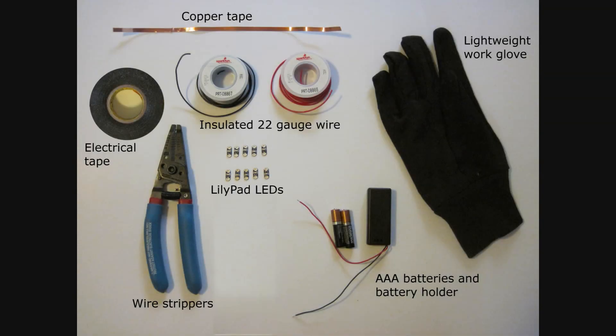To get started with this project, you'll need the materials pictured here. You're going to start out with a lightweight winter or work glove. We have two AAA batteries and a battery holder, ten LEDs, five of them are green and five of them are red, specifically designed for e-textiles to work with the LilyPad Arduino. You'll need a pair of wire strippers, electrical tape, copper tape, and some insulated wire to make all your connections.